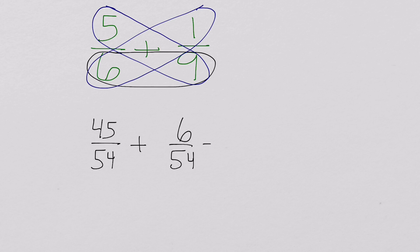So when we add it together, we get 51 54ths. Now this is great, but here's the problem.